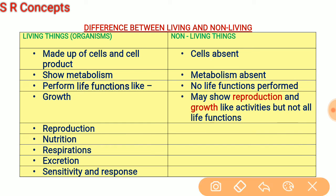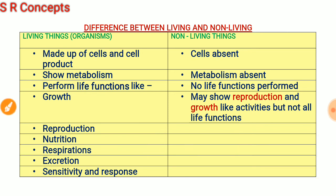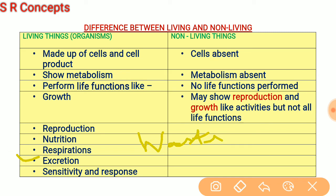Respiration is the process of obtaining energy from food. Inside the cells of a living organism, food molecules are oxidized or broken down and energy is released, which is utilized for different life functions. Excretion is the process of removing waste materials from the body — for example, carbon dioxide produced during respiration is removed through excretion.